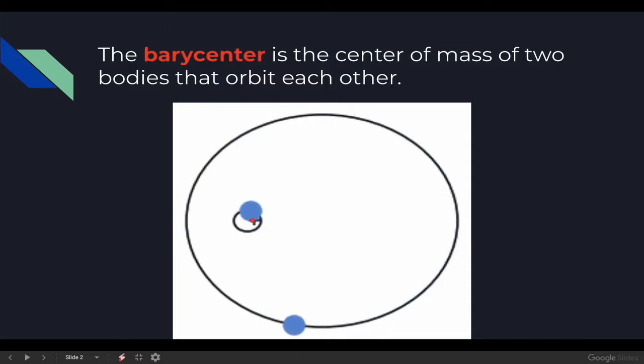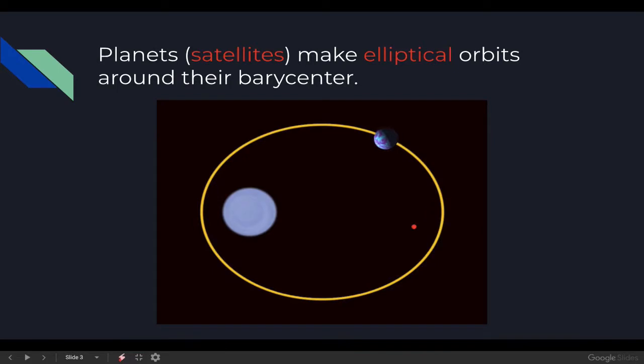In the problems that we're going to be looking at, the barycenter is going to be located pretty much near the center of our larger object. So we can also think of the barycenter as the thing that is being orbited. The first rule of orbit is that planets or satellites, satellite is really anything that orbits a larger body, make elliptical orbits around their barycenter.